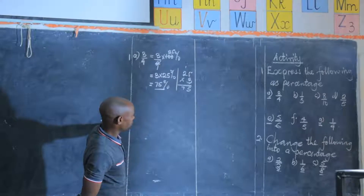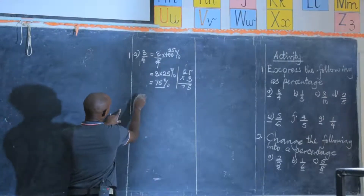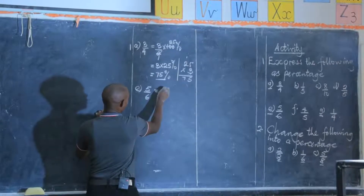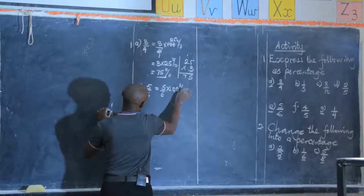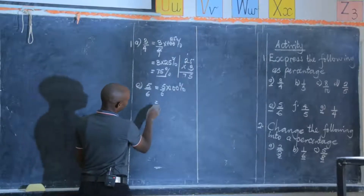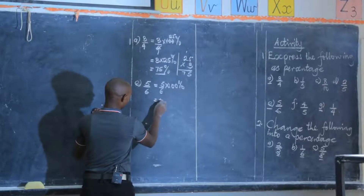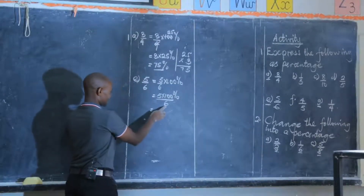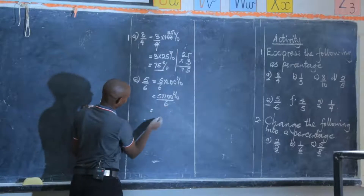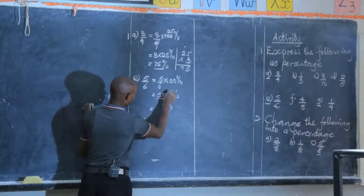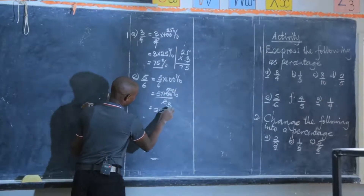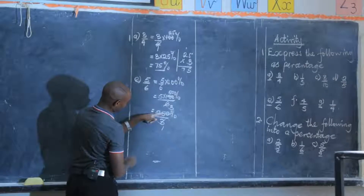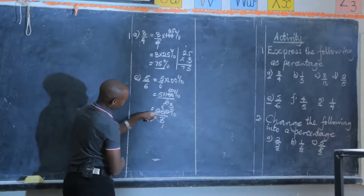Number one (e): express 5 out of 6 into a percentage. This means 5/6 times 100%. 100 is not exactly divisible by 6, so we multiply 5 times 100% then divide by 6. We can use 2: 100 divided by 2 is 50, so we get 250% divided by 3. 3 goes into 25 eight times remainder 1, then into 10 three times remainder 1, giving 83 and one-third percent.